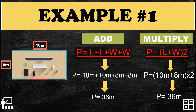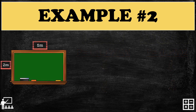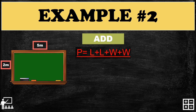Let's try another example. Here is a blackboard with a length of 5 meters and a width of 2 meters. Using the addition formula: L + L + W + W — substitute so that the length is 5 meters and the width is 2 meters.